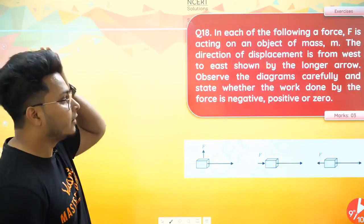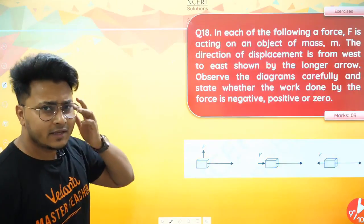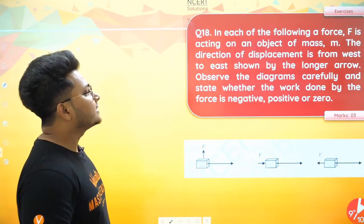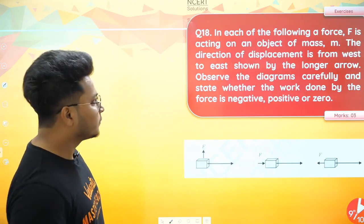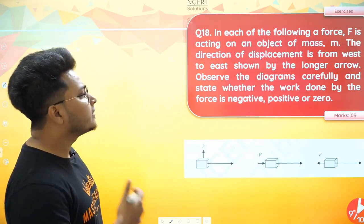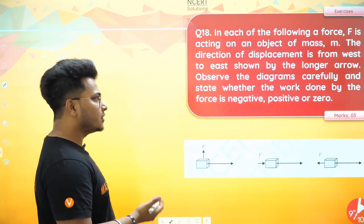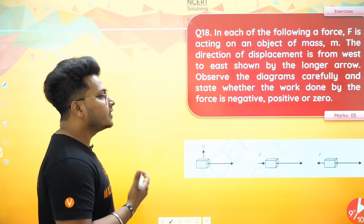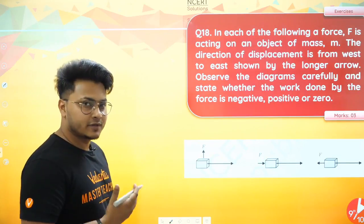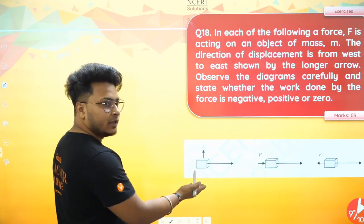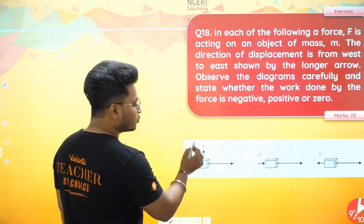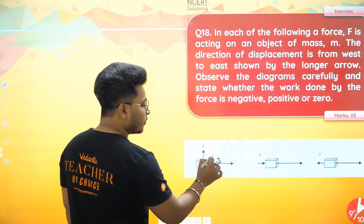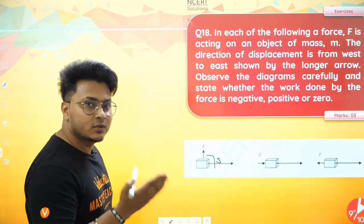Question 18: In each of the following, a force F is acting on an object of mass m. The direction of displacement is from west to east, shown by the larger arrow. Observe the diagram carefully and state whether the work done by the force is negative, positive, or zero. In the first case, the force and the displacement are perpendicular to each other, so the work done is zero.